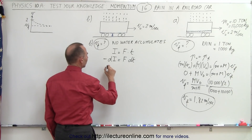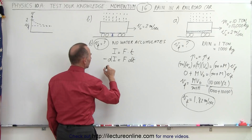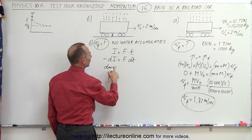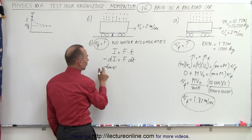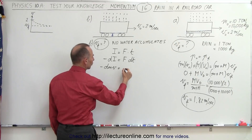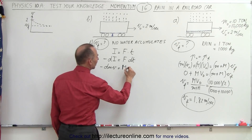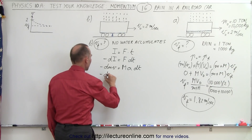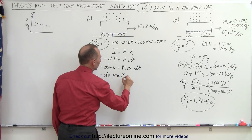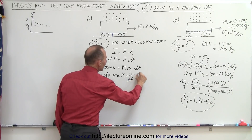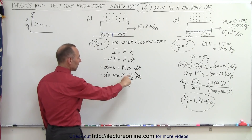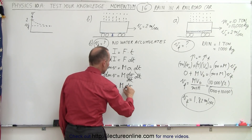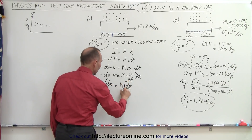The impulse dI can be expressed as dm times v — the small amount of mass entering times the car's current velocity. With a minus sign, that equals the force, which is mass of the car times acceleration times dt. Rewriting acceleration as dv/dt, we get: minus dm × v equals M × (dv/dt) × dt. The dt terms cancel, leaving minus dm equals M × dv/v.